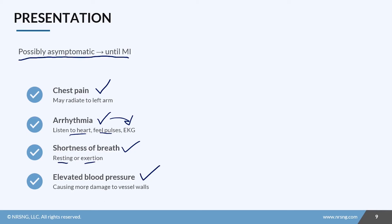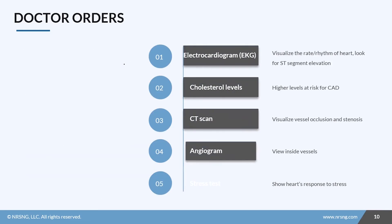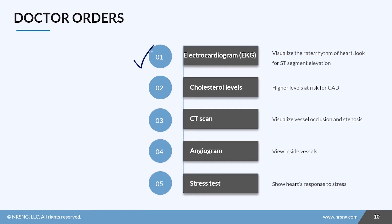The patient might have elevated blood pressure, which causes more damage to those vessel walls. If the doctor is concerned about coronary artery disease, they might order different tests: an EKG to visualize the rate and rhythm of the heart — looking for ST segment elevation — cholesterol levels, a CT scan to visualize vessel occlusion and stenosis, an angiogram to view inside the vessels, and a stress test to show the heart's response to physical activity.